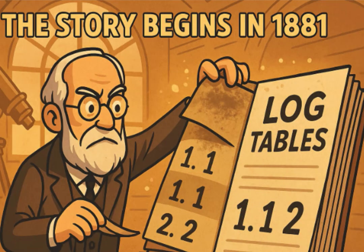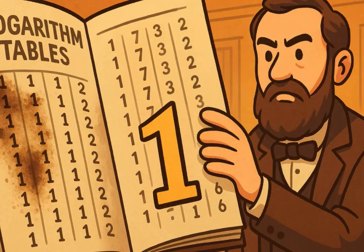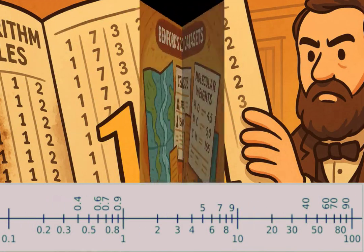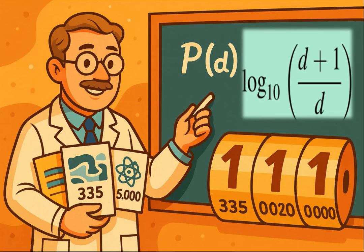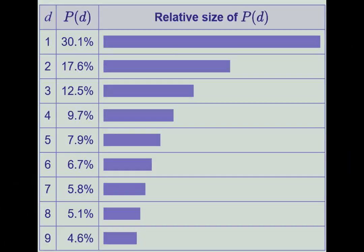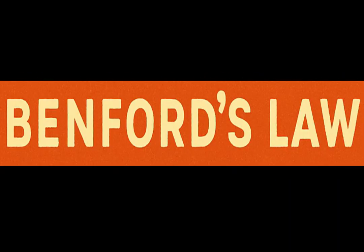The story begins in 1881. Astronomer Simon Newcomb noticed the first pages of his logarithm tables — those for numbers beginning with 1 — were far grimier than the rest. He ran the numbers and published the very first formula for a digit distribution that wasn't uniform. Half a century later, General Electric physicist Frank Benford took the idea mainstream, sampling 20,229 figures from 335 rivers to 5,000 constants and finding they all matched the logarithmic rule. Digit 1 popped up 30.1% of the time; digit 9 only 4.6%. The phenomenon now bears his name, though Newcomb got there first — a classic Stigler's Law moment.